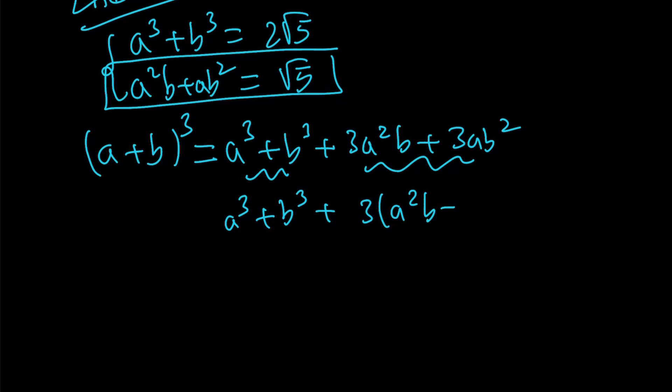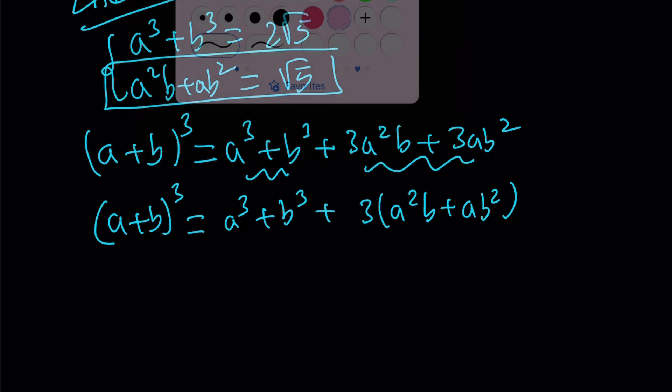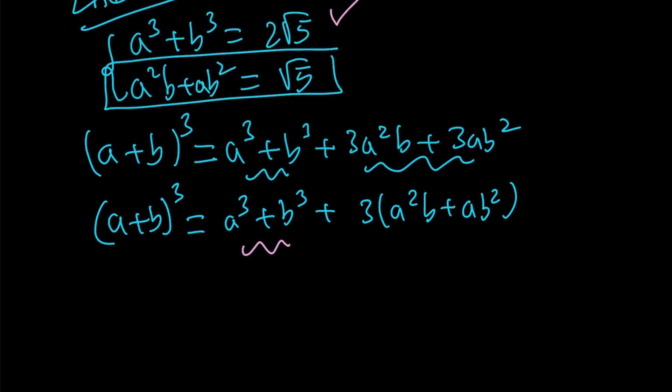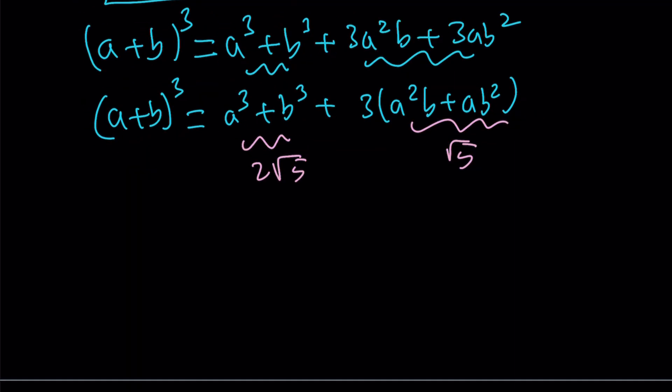Let's go ahead and take out a 3. That should be b². And that is (a+b)³. And then from here, a³ + b³ is given as 2√5. And this is given as √5. Their sum is 5√5 as before. And this tells us a+b = √5.